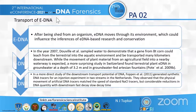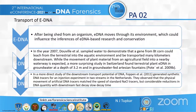Regarding the transport of eDNA: shed from organisms, environmental DNA moves through environmental influence. In Switzerland, a surprising study found that phytoplankton DNA would leach from terrestrial into aquatic environments, transported many kilometers downstream. Terrestrial plant eDNA was found in groundwater at a depth of 3.2 meters in a groundwater-fed artesian fountain. A more direct study of downstream transport generated synthetic DNA tracers injected into two streams, finding that artificial DNA tracers matched an ACL tracer, with reduction in DNA quantity downstream indicating slow to fast decay.